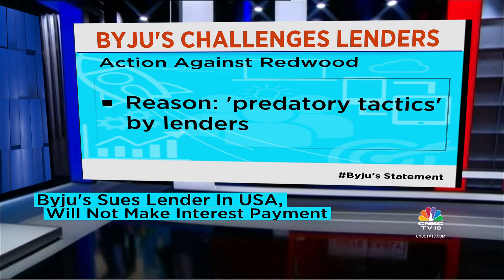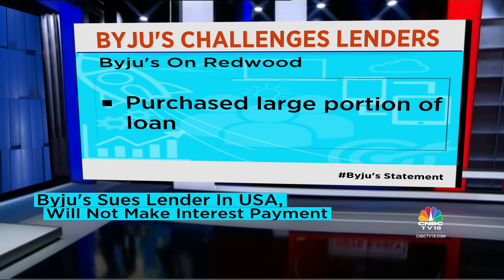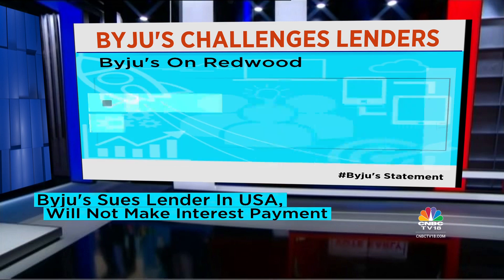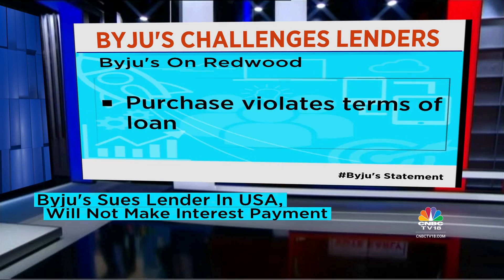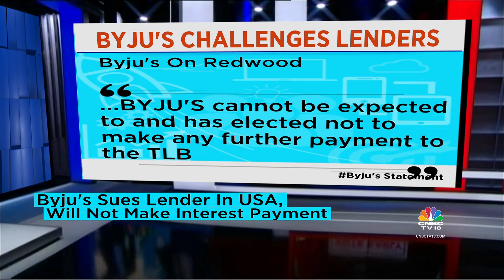Byju's also said that it will not make any payments or interest to the term loan B lenders until the dispute is resolved, but remains open to discussions with term loan B lenders and is ready and able to continue making payments under the term loan B if lenders withdraw their ill-conceived actions and honor the terms of the agreement.